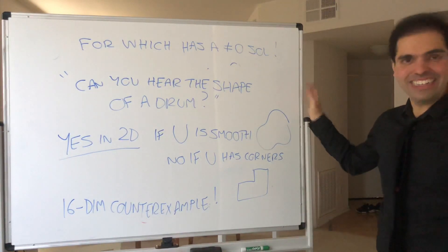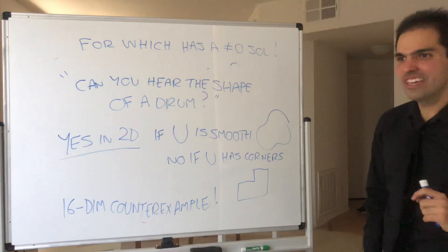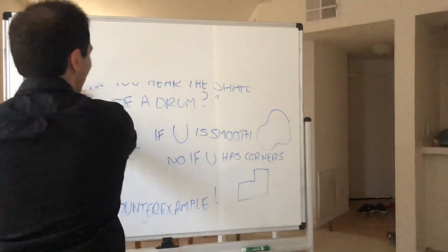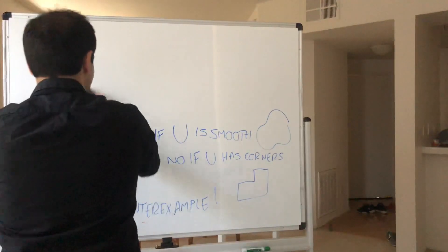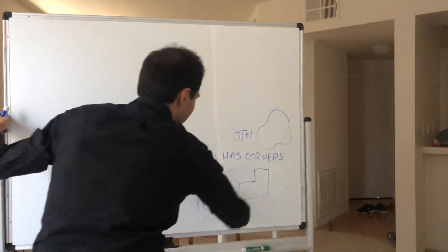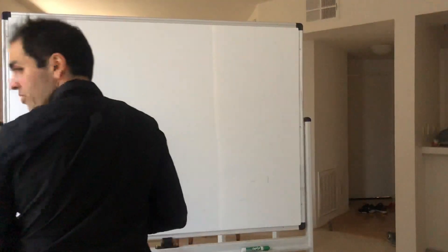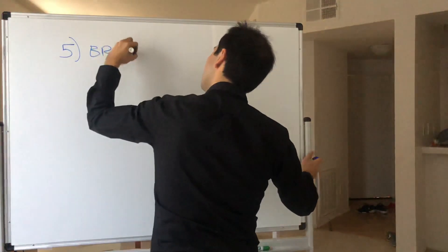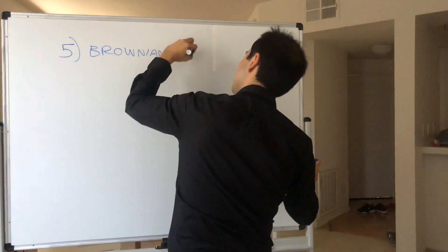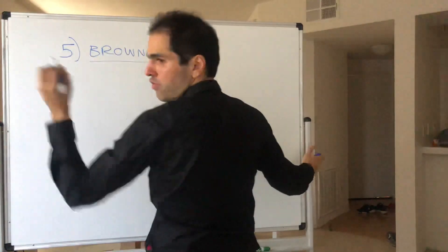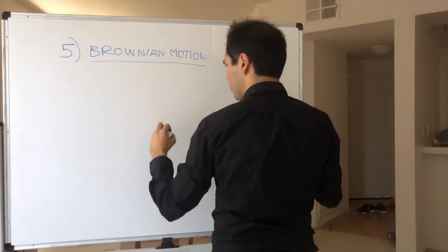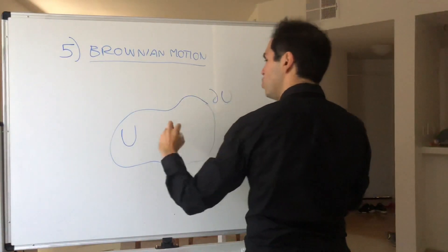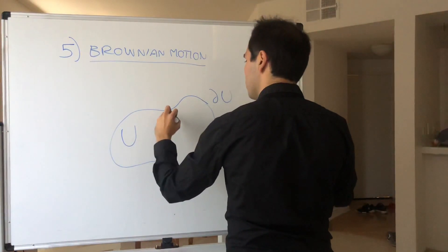And last but not least, one of my favorite examples. It's with Brownian motion. And again, do not attempt this at home. So suppose the following. You are in a domain. Again, this is U. This is the boundary. And you start at x.